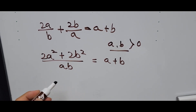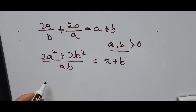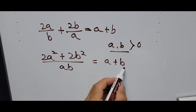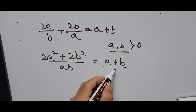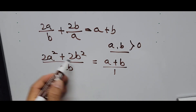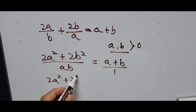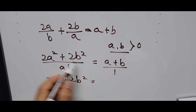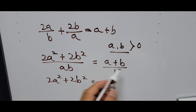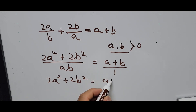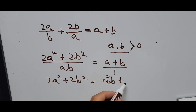Simplifying this equation, a plus b is treated as having a denominator of 1. So we cross multiply again: 2a squared plus 2b squared times 1 equals ab times (a plus b), which expands to a²b plus ab².